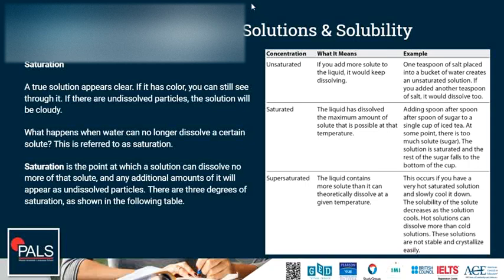A supersaturated solution contains more solute than it can theoretically dissolve at a given temperature. This occurs if you have a very hot saturated solution and slowly cool it down — the solubility of the solute decreases as the solution cools, since hot solutions can dissolve more solute than cold ones. When cooled, it becomes supersaturated; these solutions are not stable and crystals will eventually start to form.